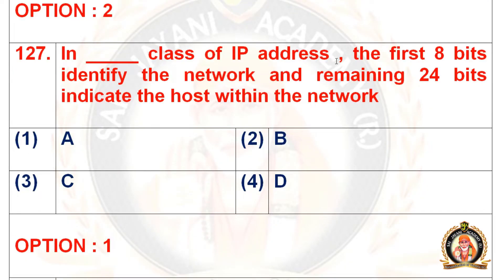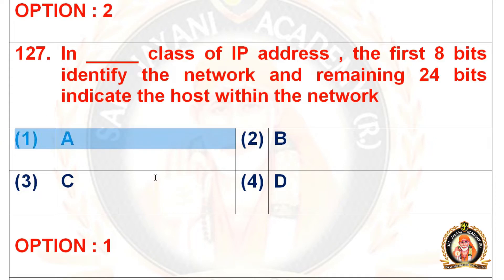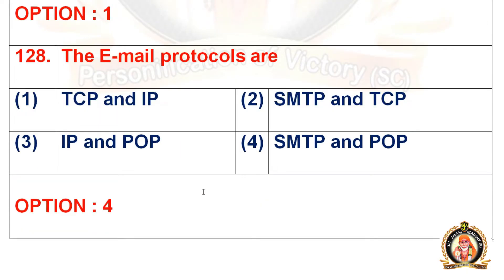Question 127: In dash class of IP address, the first 8 bits identify the network and the remaining 24 bits indicate the host within the network. Options are A, B, C, and D. The right option is the first option, that is Class A. In Class A, the first 8 bits identify the network and the remaining 24 bits indicate the host.